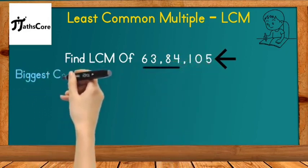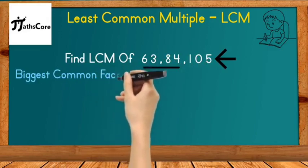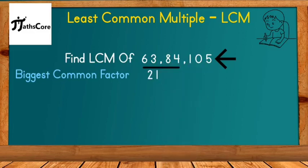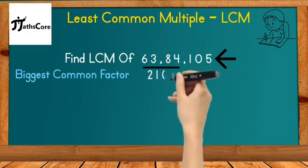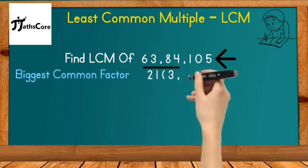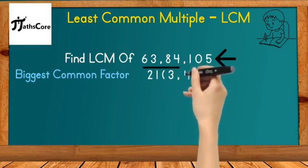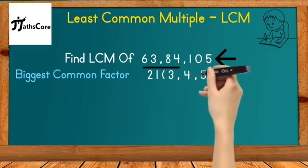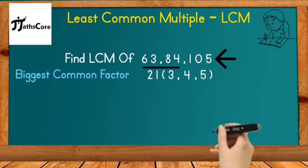In this case, we take the biggest common factor from all three numbers. 21 is the biggest common factor. If we divide 63 by 21, we get 3. If we divide 84 by 21, we get 4. And if we divide 105 by 21, we get 5.